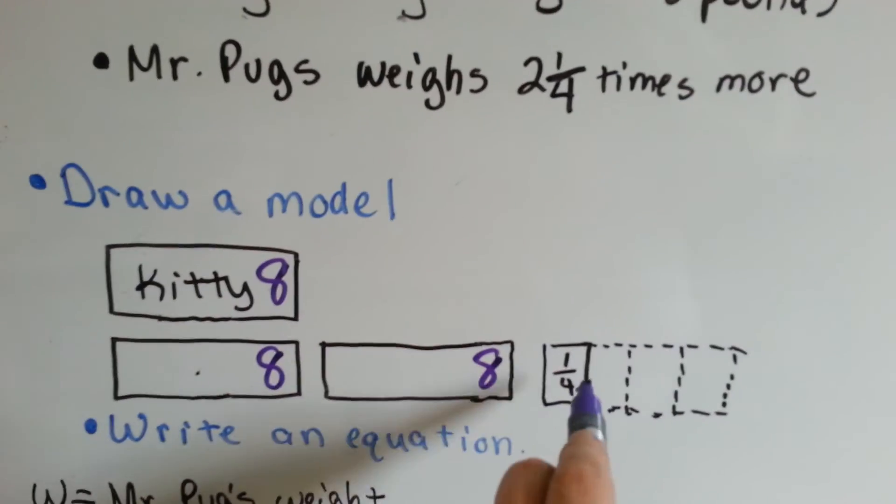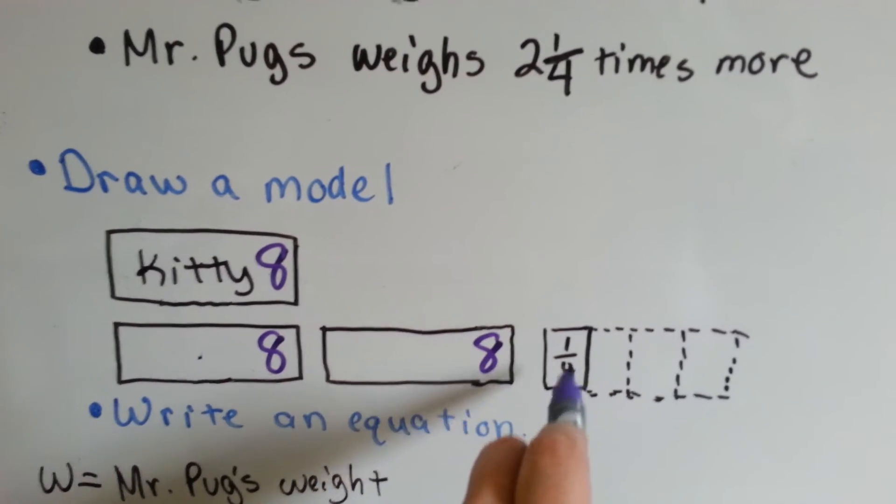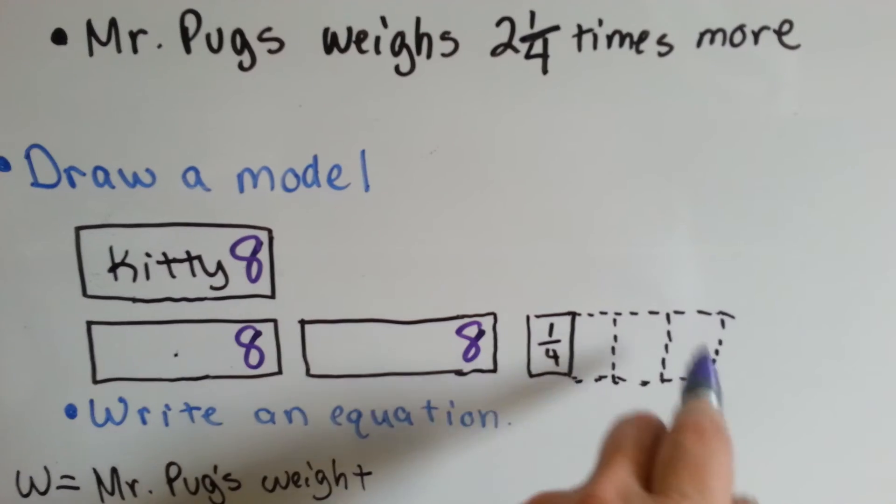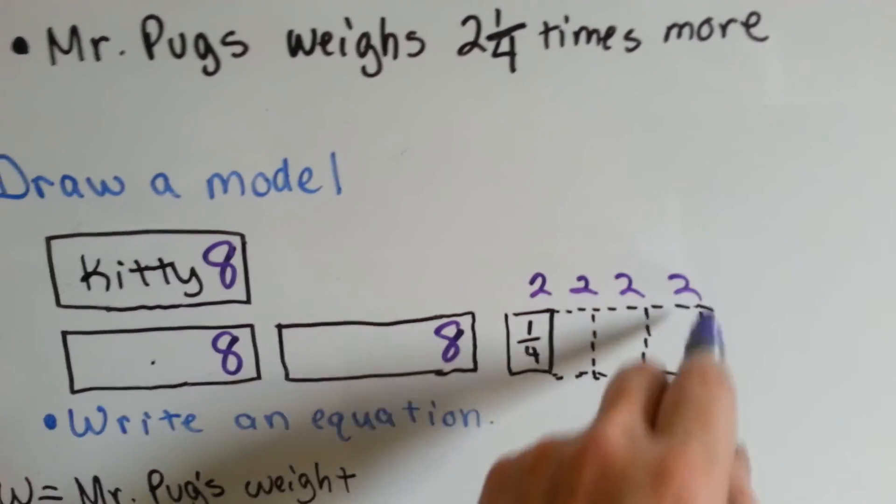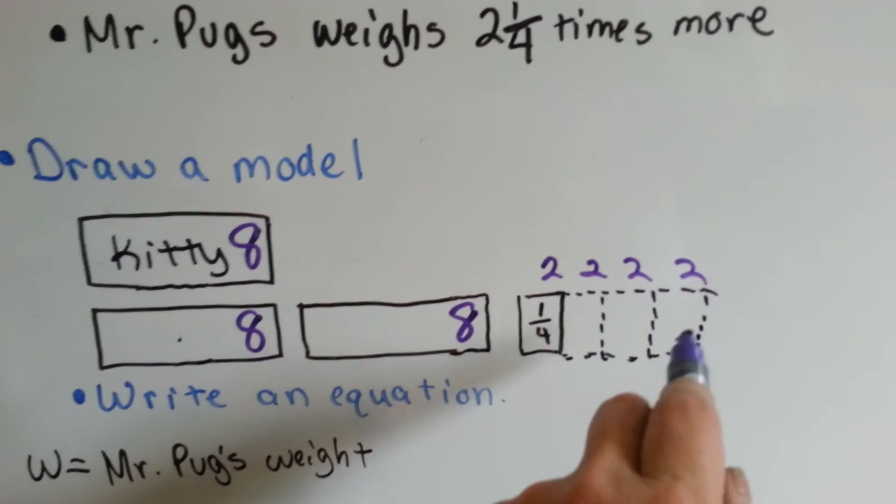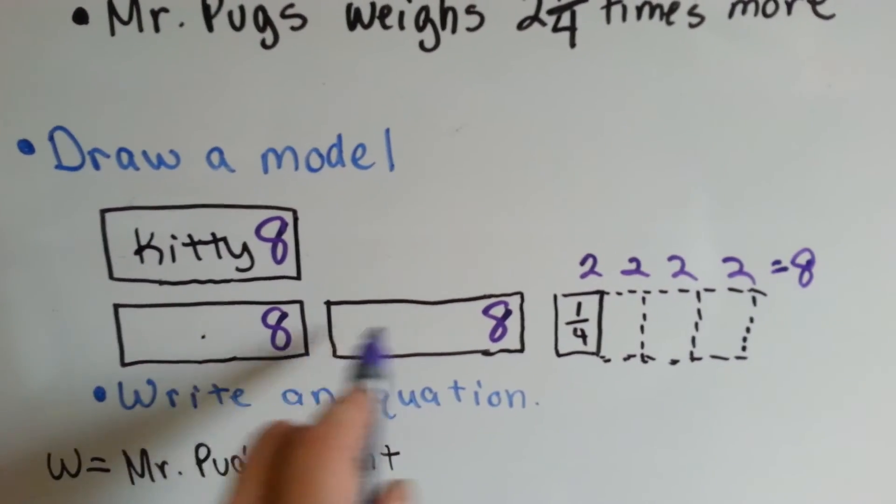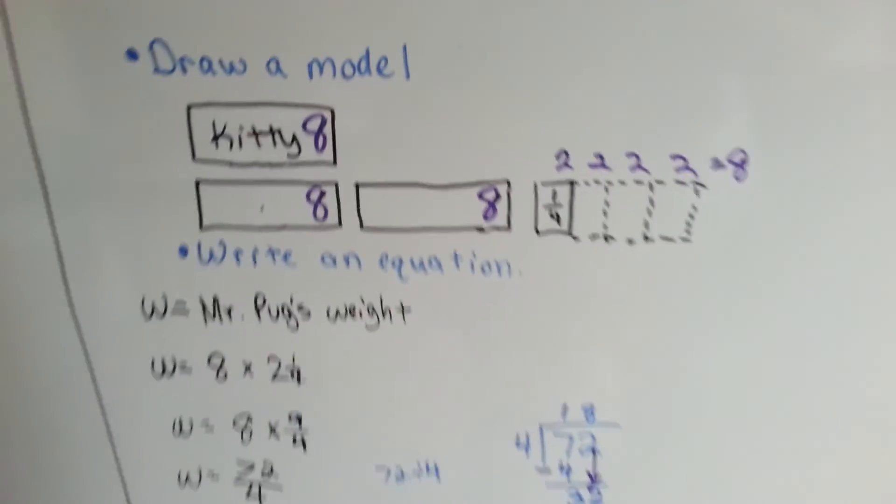And if one-fourth of this one needs to be figured out, we take the eight and split it into fours, and that would be two, two, two, and two to make that an eight. And we would know we have eight plus eight plus two, which is the same thing. It's eighteen pounds.